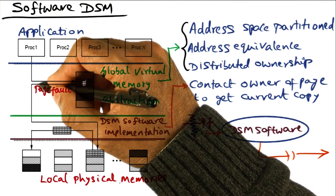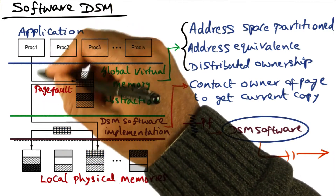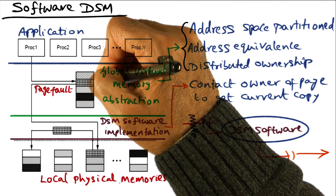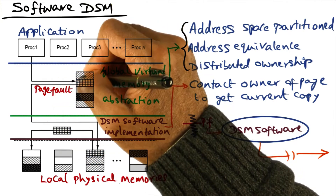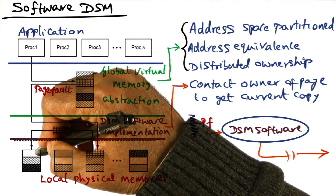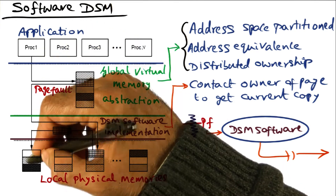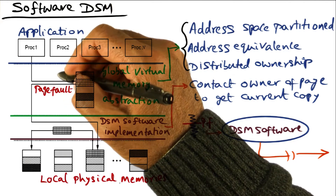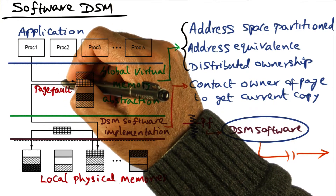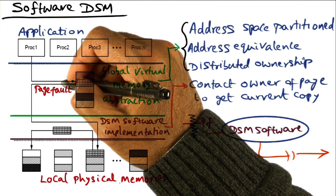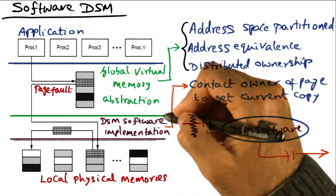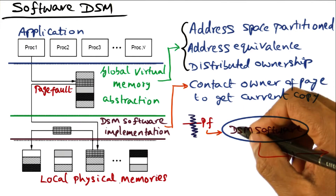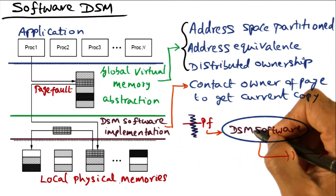For instance, let's say that there was a page fault on processor one for a particular portion of the global address space. That portion of the global address space is currently not resident in the physical memory of processor one, so there's a page fault. There is a cooperation between the operating system and the DSM. So when the page fault happens, it is communicated by the operating system to the DSM software, saying here is a page fault — you handle it.